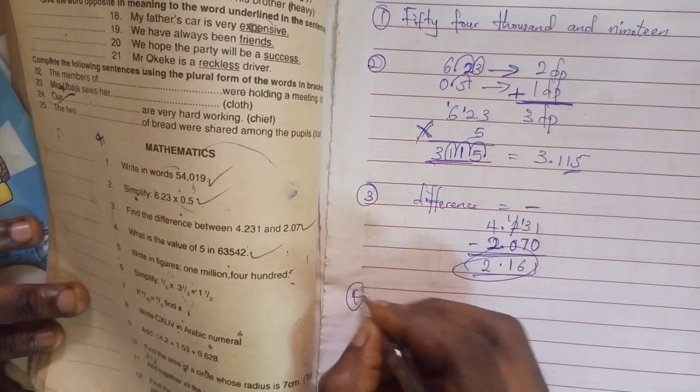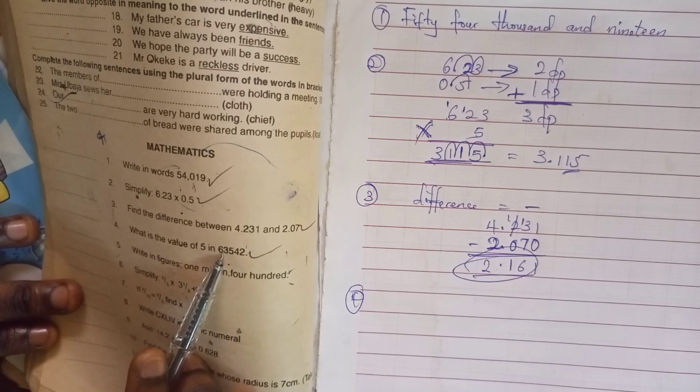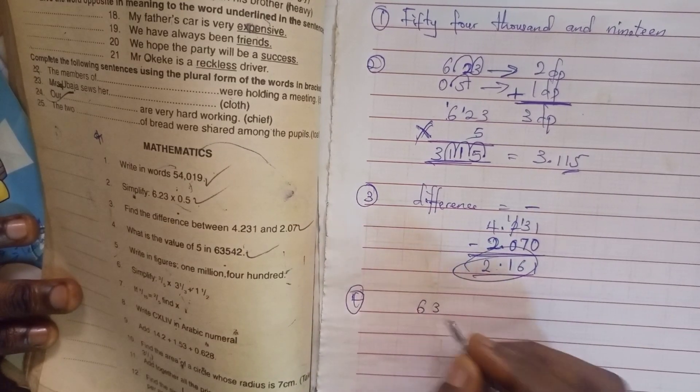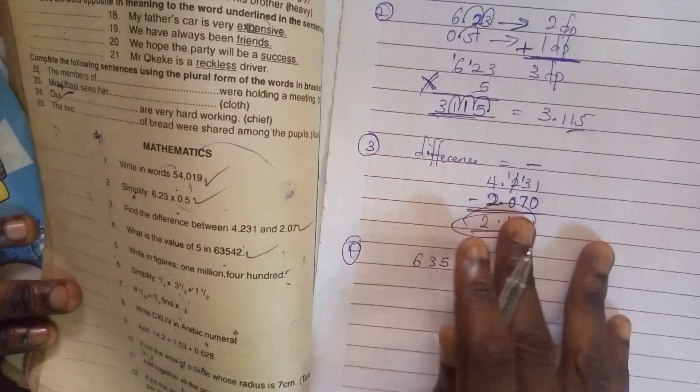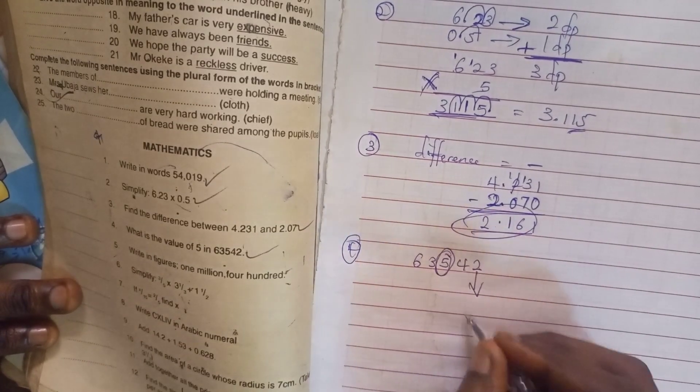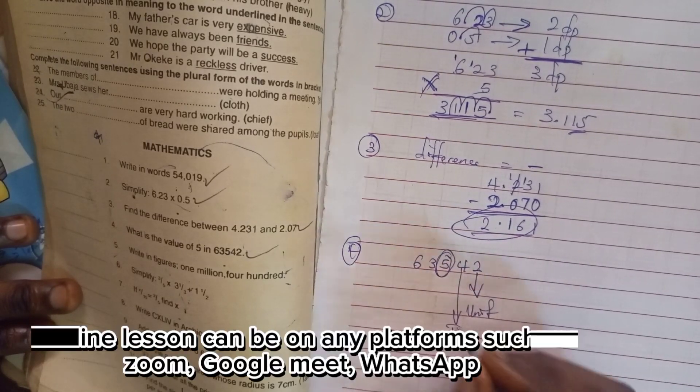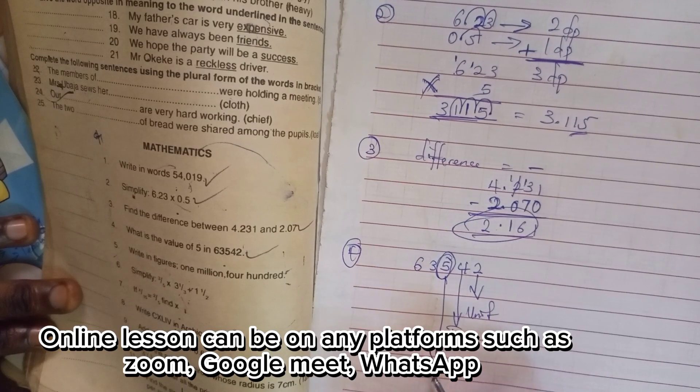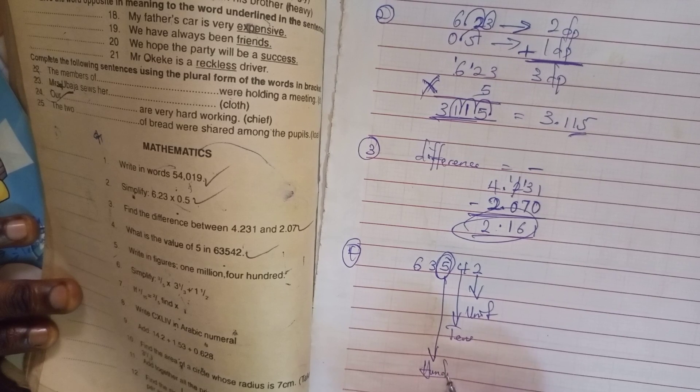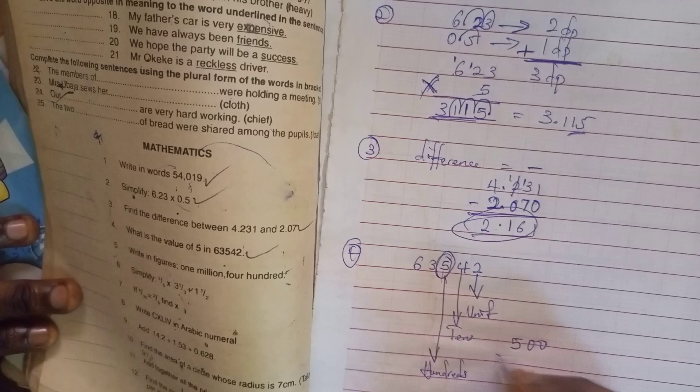Now the fourth part of the question is, what is the value of 5 in 63,542? So you write 6, 3, 5, 4, 2. To find the value of this 5, you start from here. This is unit, this is 10s, and the third one is 100s. So the 5 is 500s. So that is the value.